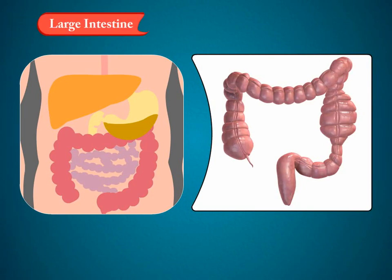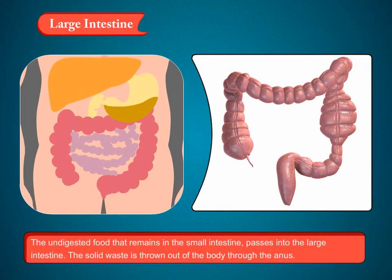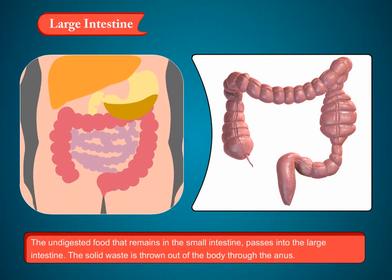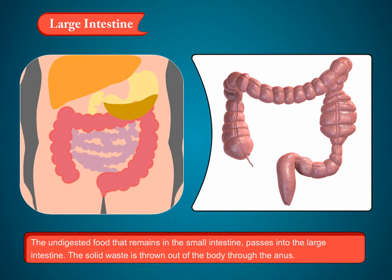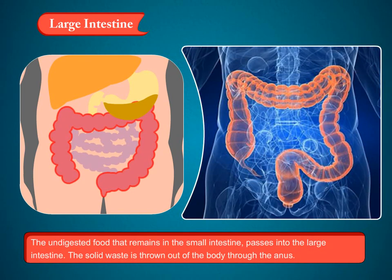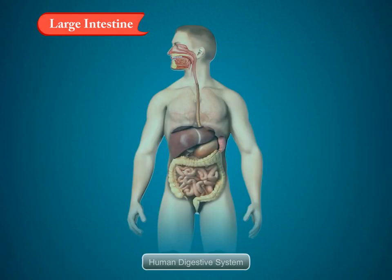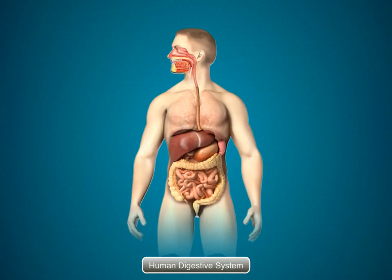Large intestine. The undigested food that remains in the small intestine passes into the large intestine. The solid waste is thrown out of the body through the anus.